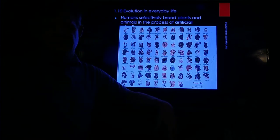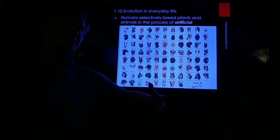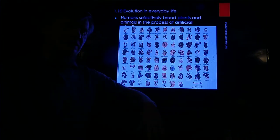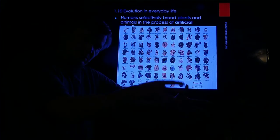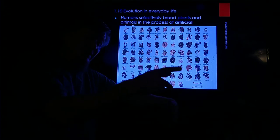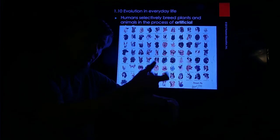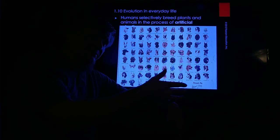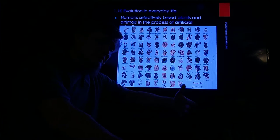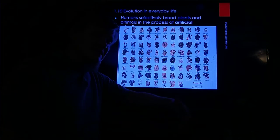We do it through artificial selection. We do it by deciding who reproduces in the next generation. If this individual was allowed to reproduce and that one isn't, then that's unequal reproductive success. Unequal reproductive success leads to a different combination of genes in the next generation.